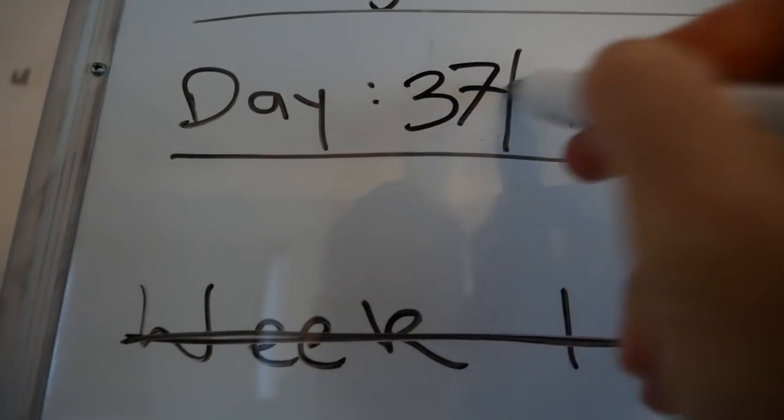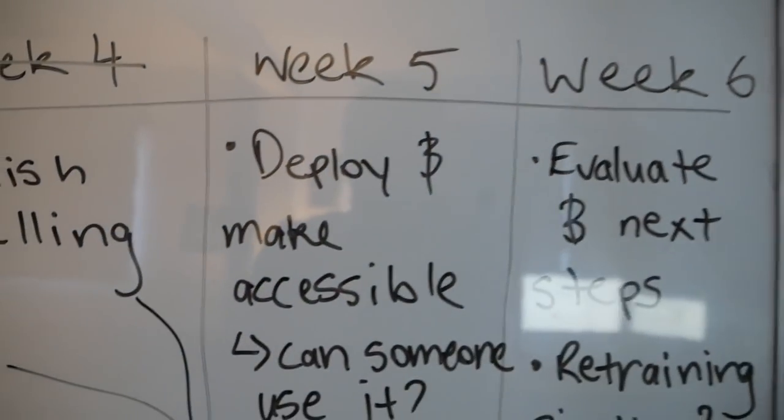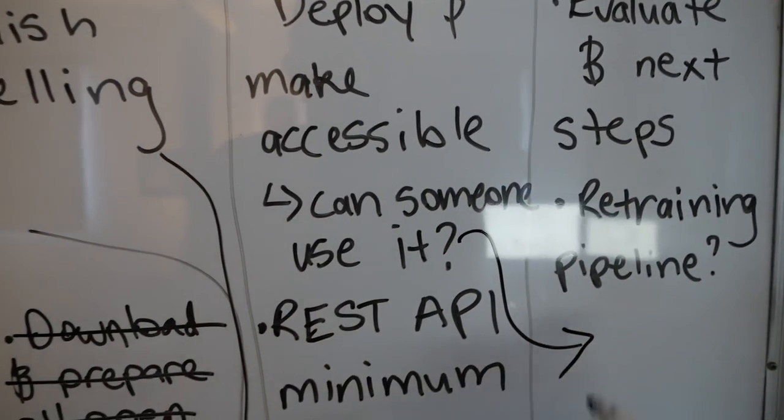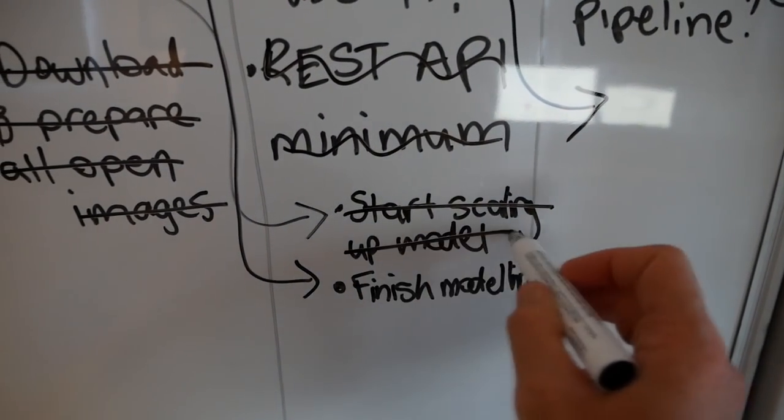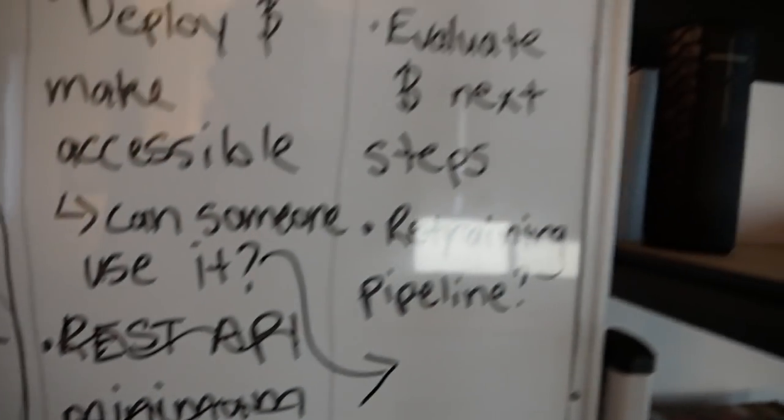We have come so far — we are getting right to the tail end of this 42-day project. It's like day 38 or something; I don't actually even know. All I know is I'm going to keep going until this model is deployed in a little app that you can access, take a photo and use Airbnb's amenity detection on some room in your place. Last week was week five — deploy and make accessible. We haven't done that yet, so that's going to move over to week six: REST API minimum. We might adjust that, but start scaling up modeling and finish modeling — those two can be ticked off. How exciting!